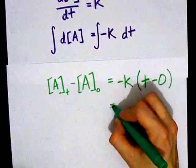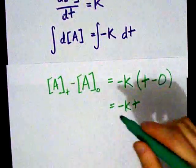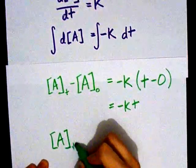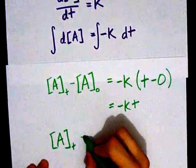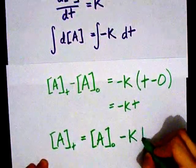Simplifying this side, I get minus kt, and if I was to solve for my [A] of t, I get that my concentration at any time t is my initial concentration minus kt.